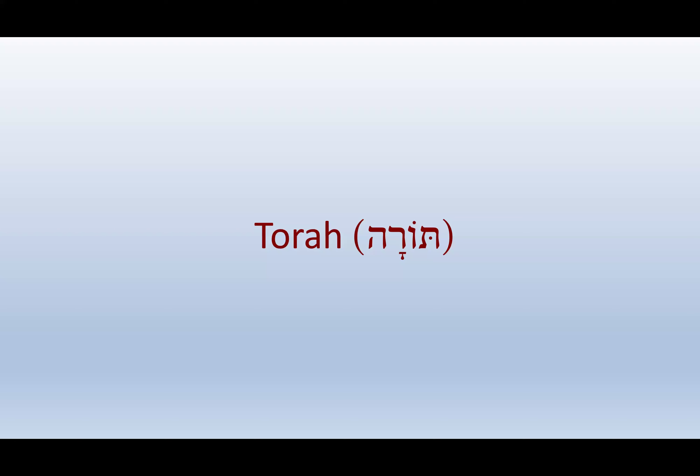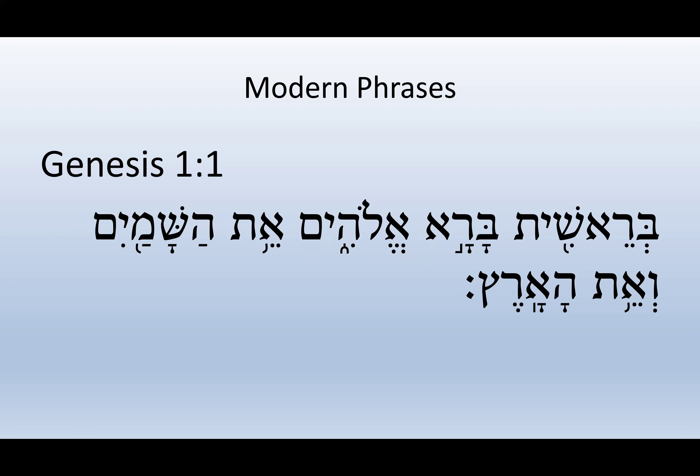Starting with the Torah — here's how you spell it in Hebrew, and it means law. We have Genesis 1:1, the first verse: Bereshit, Barah, Elohim, Eit, Hashemayim, Ve'et, Ha'aretz. The very first word, Bereshit — that's what they call Genesis in Hebrew. It means 'in the beginning.' That's the name of the book.